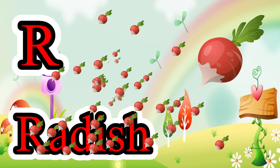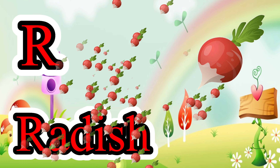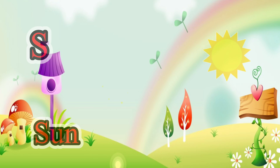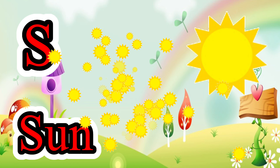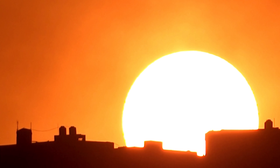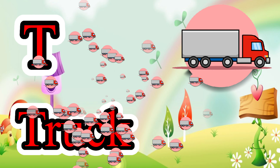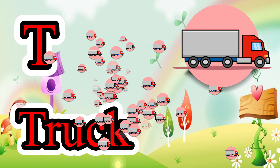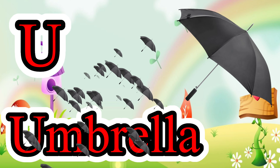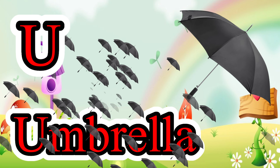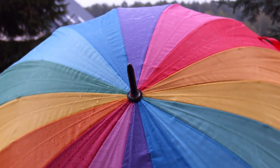R for Radish. S for Sun. T for Truck. U for Umbrella.